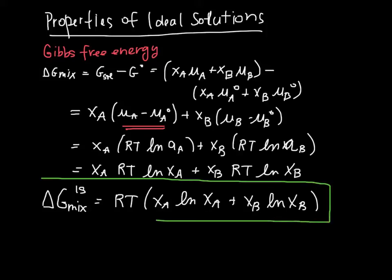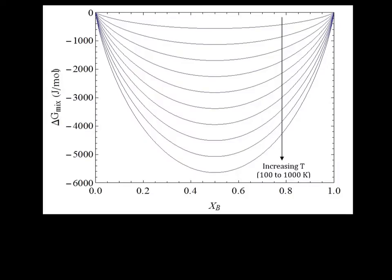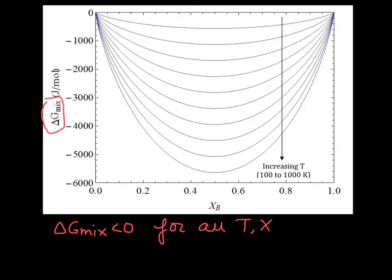We want to keep this handy as delta G for an ideal solution. It's a function of temperature and composition, but nothing else — nothing specific to one system or another. Looking at the plot of delta G mix as a function of composition, delta G is always less than zero for all T and for all X. This means mixing is always energetically favorable. The different lines correspond to different temperatures from 100K to 1000K; the higher the temperature, the more negative delta G becomes.